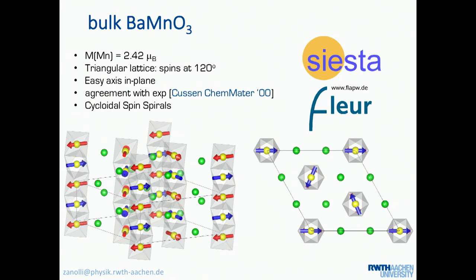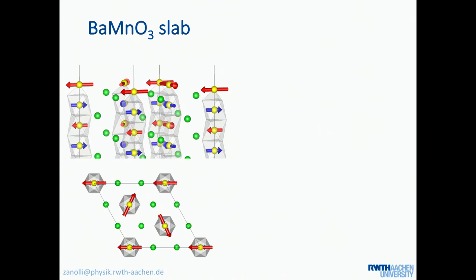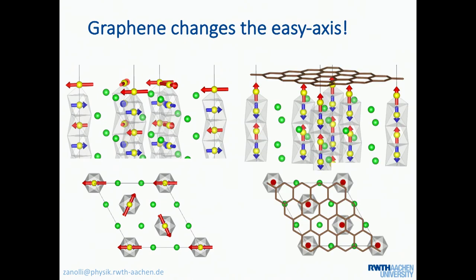As you can see, the easy axis is basically an easy plane in plane here. So, what happened now when we cut the slab? So, for a barium manganese oxide slab, we basically recover the bulk properties. So, still in plane easy axis. But when we put the graphene on top of it, things change dramatically.